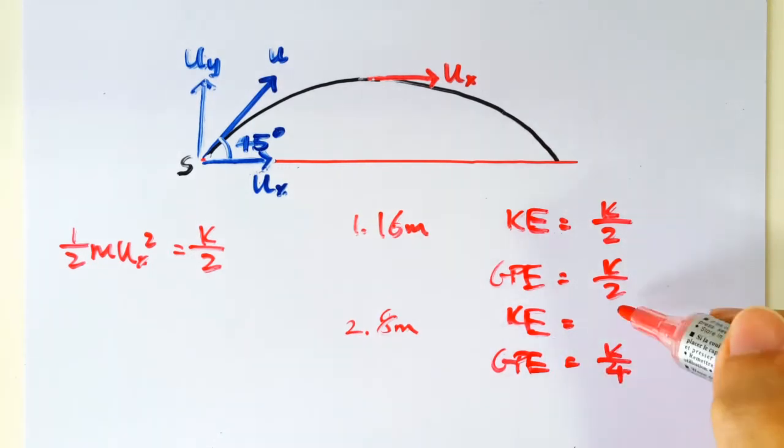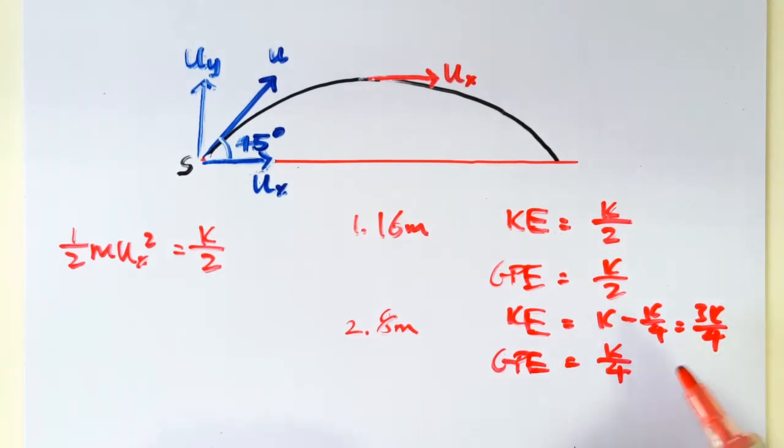That tells us that its KE should be K minus K over 4, which is 3K over 4. Reason is of course, the total energy is always K. So if your GPE is K over 4, KE must be 3K over 4, so that the total remains as K. Okay, that's all I have to say.